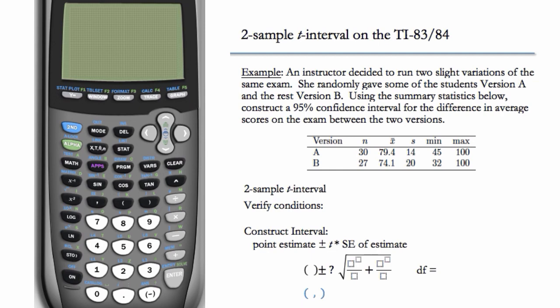So here, because we have averages and because we have two groups that are not paired, we have two separate groups, we're going to do a two-sample t-interval.